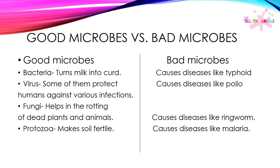Good microbes versus bad microbes: bacteria can turn milk into curd, but also causes diseases like typhoid. Viruses can protect humans against various infections, but also cause diseases like polio. Fungi helps in the rotting of dead plants and animals, but also causes diseases like ringworm. Protozoa makes the soil fertile, but also causes diseases like malaria.